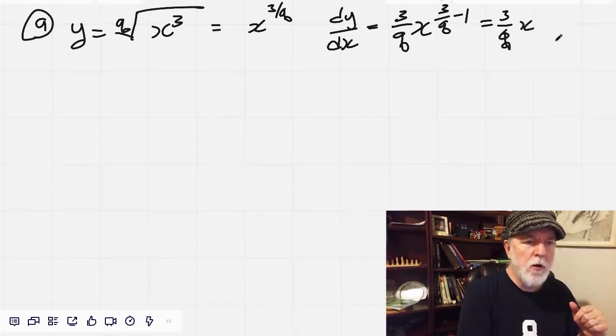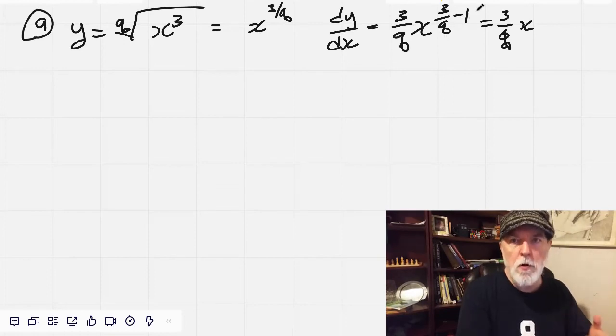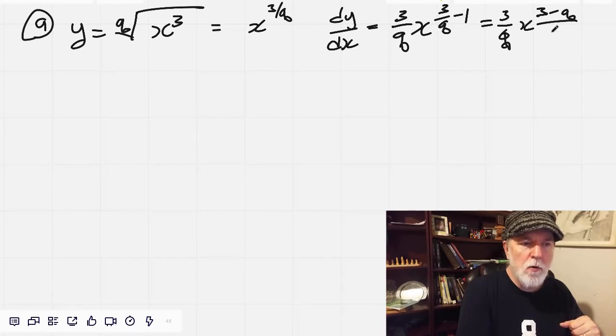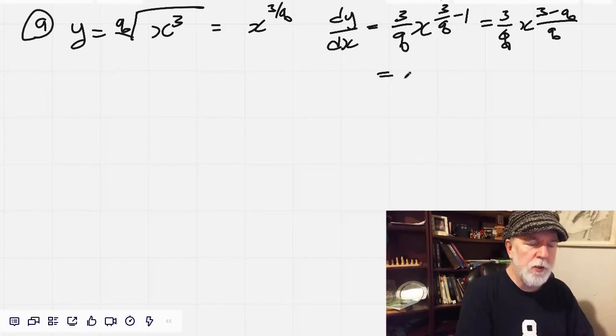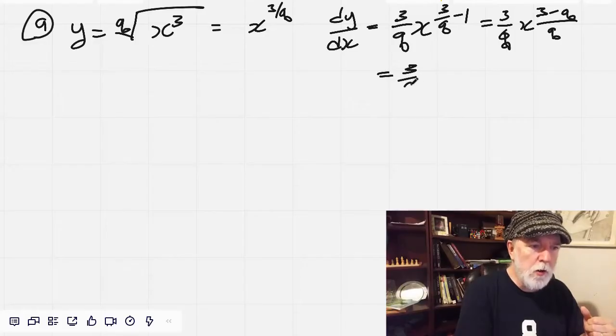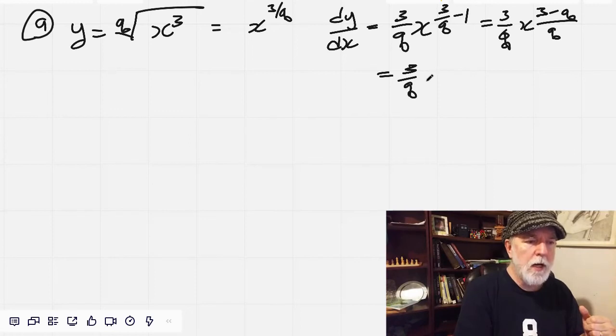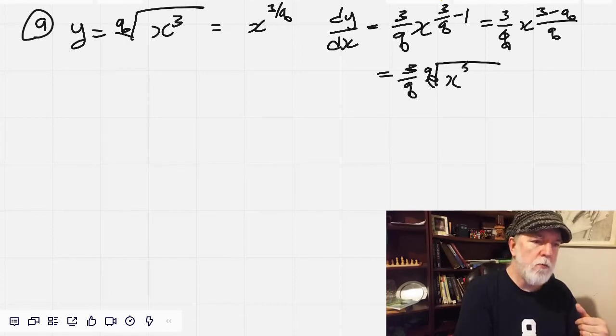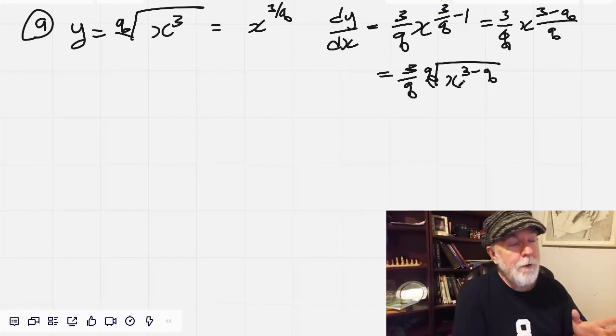3 over q, x to the power of 3 over q minus q over q is 3 minus q all over q. And then putting that as a radical that all equals 3 over q times the qth root of x to the 3 minus q.